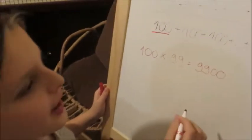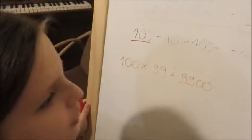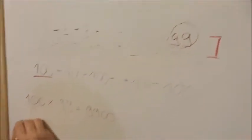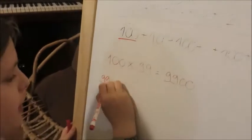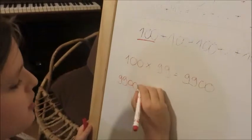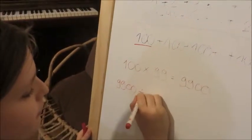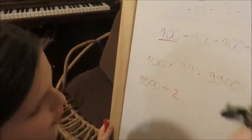But what do we do with that? Because we have two rows here, so what are we going to do? We're going to put 9,900 divided by 2, because there are two rows.